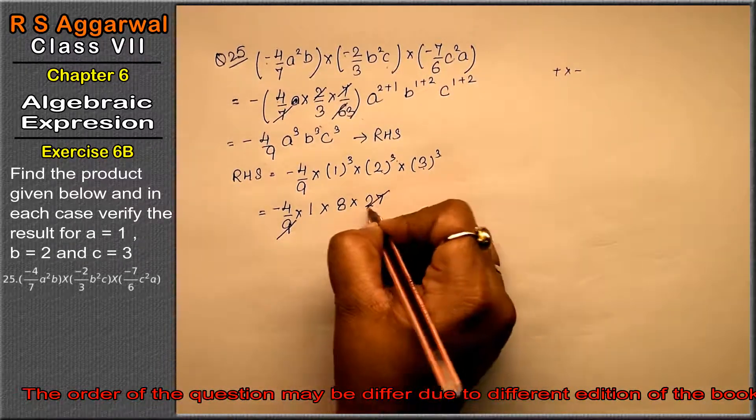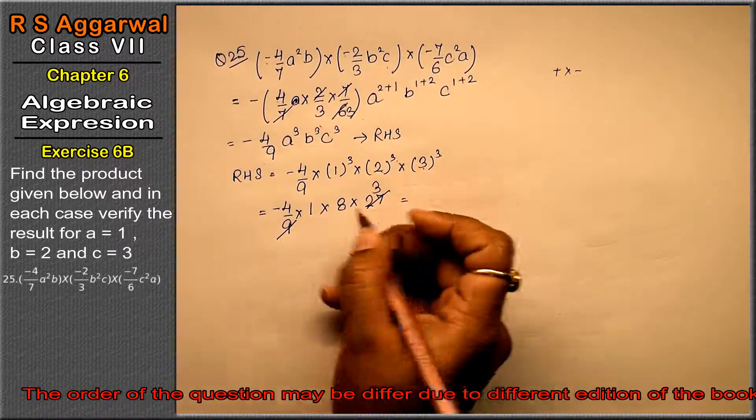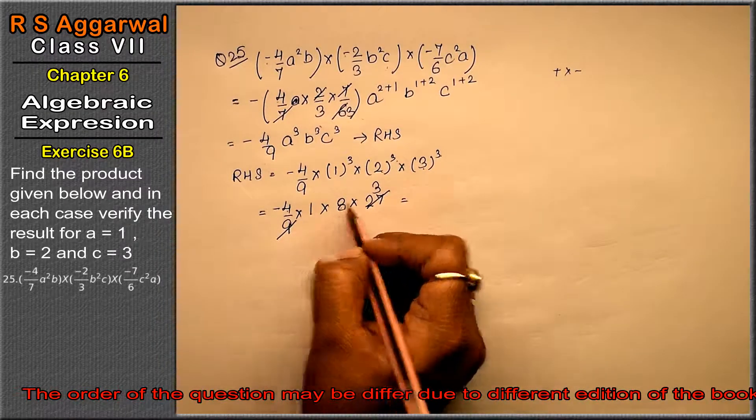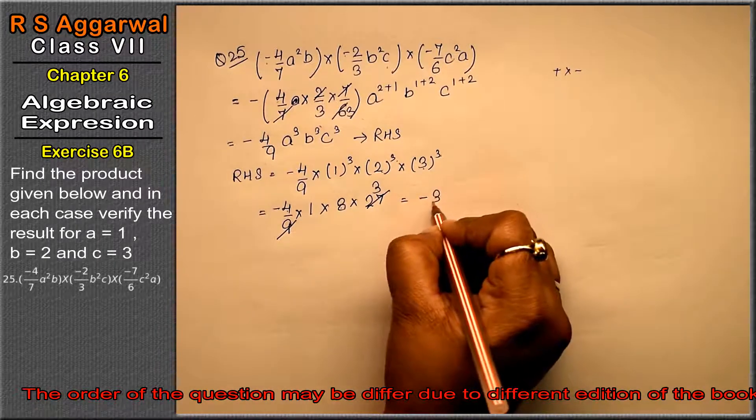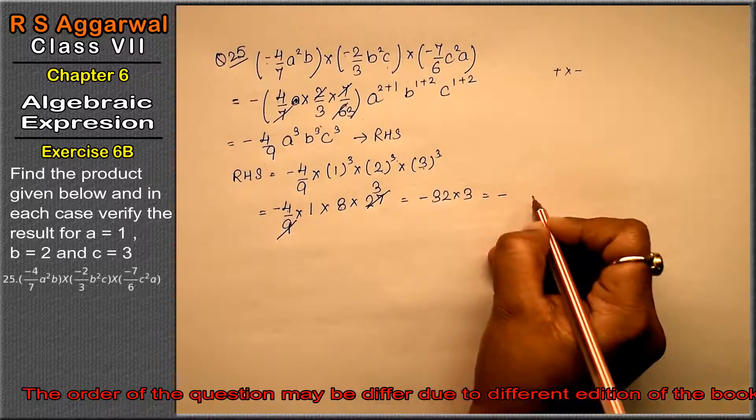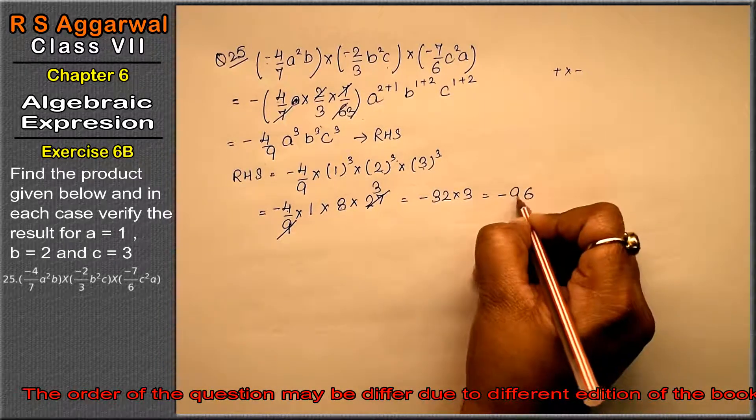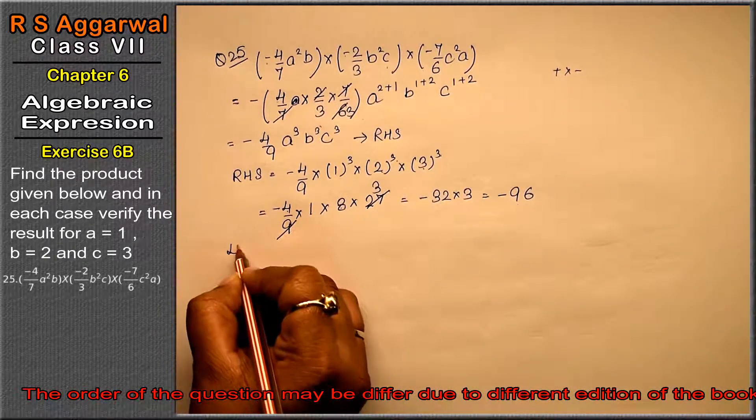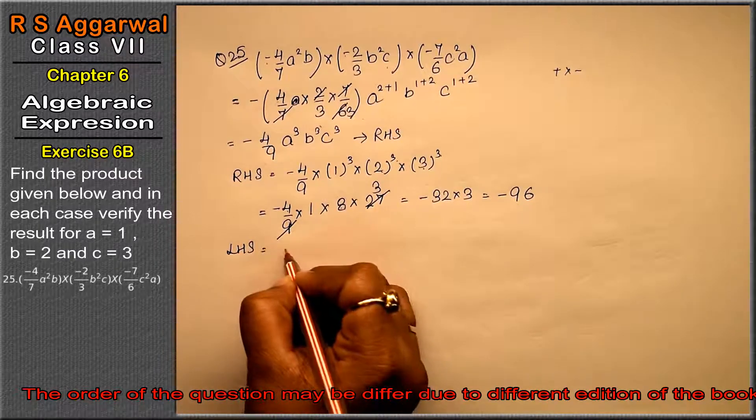So, 9 times 1 is 9, 9 times 3 is 27. So this becomes minus 4 times 8 is 32 into 3.